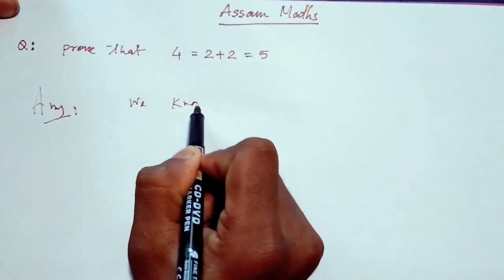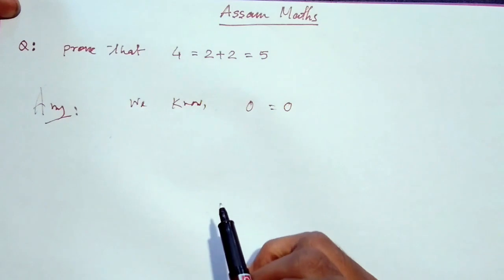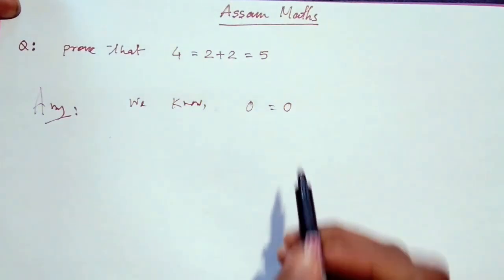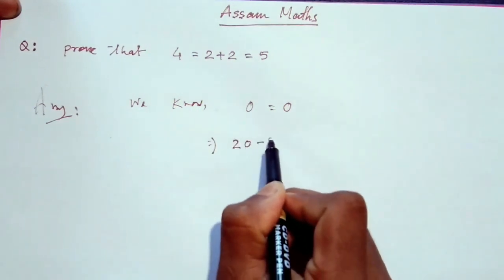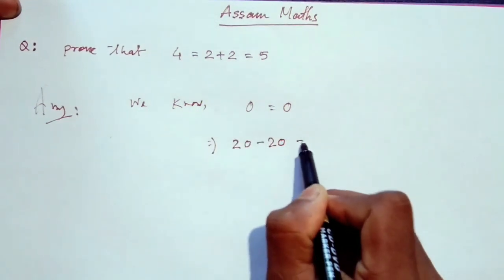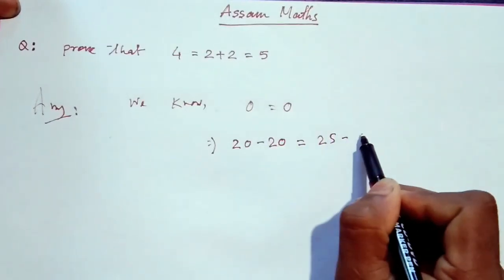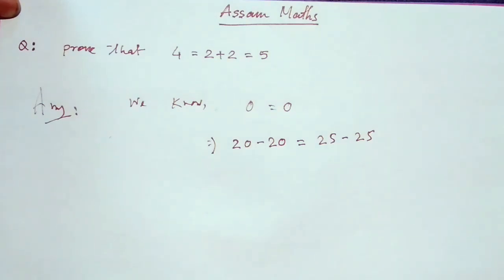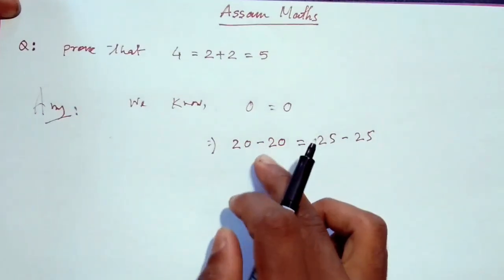We know 0 is equal to 0. Also, 20 minus 20 is equal to 0, and 25 minus 25 is equal to 0. So 0 is equal to 0.